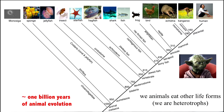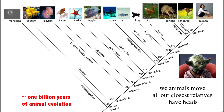Animals eat other life forms — we're called heterotrophs. Yoda has a jaw with lips, and presumably he stuffs things into his mouth, so he too would be a heterotroph. We animals also move around a lot, and our closest relatives have heads. Yoda obviously has a head and moves occasionally, so he is closely related to us.